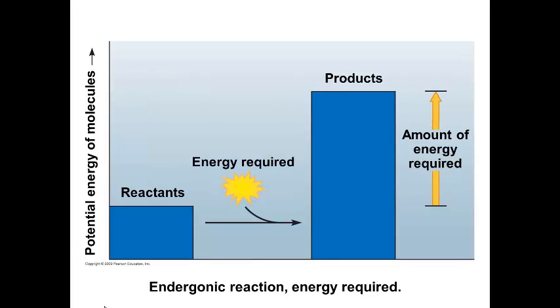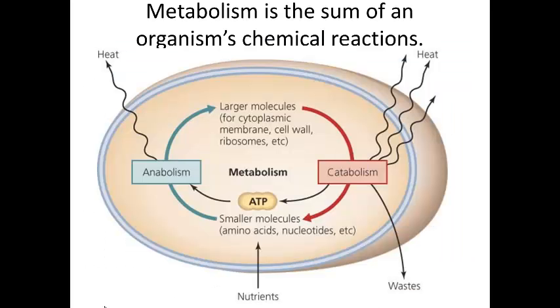Anabolic or endergonic reactions require an input of energy and yields products rich in potential energy. So reactants have less potential energy, energy is required, and products are moved from having low potential energy with those that have lots of potential energy. Photosynthesis is an example of this. So energy coupling uses energy released from an exergonic catabolic reaction to drive essential endergonic anabolic reactions, usually using the energy stored from ATP molecules.